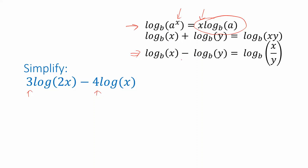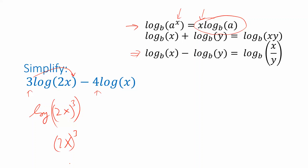That's equivalent to putting the coefficient of the logarithm inside as an exponent. For example, 3·log base 2 of x — if I take this 3, I can move it inside and make it an exponent. So I'll get log of (2x) cubed. I have to be careful: it's not just x cubed — it's the whole argument 2x that has to be cubed.